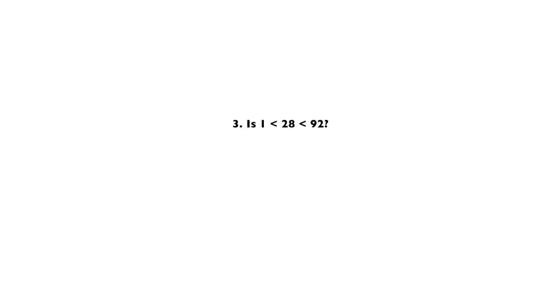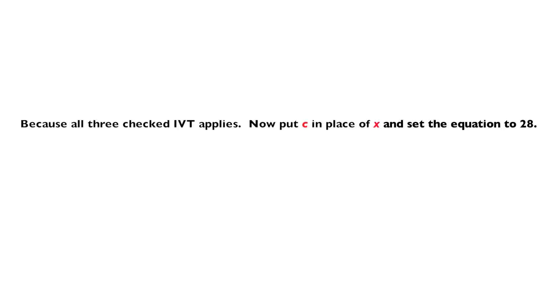Number 3: is 1 less than 28 and 92 greater than 28? Yes — 1 is less than 28 and 92 is greater than 28, so that checks. Because all three conditions checked, the Intermediate Value Theorem applies.